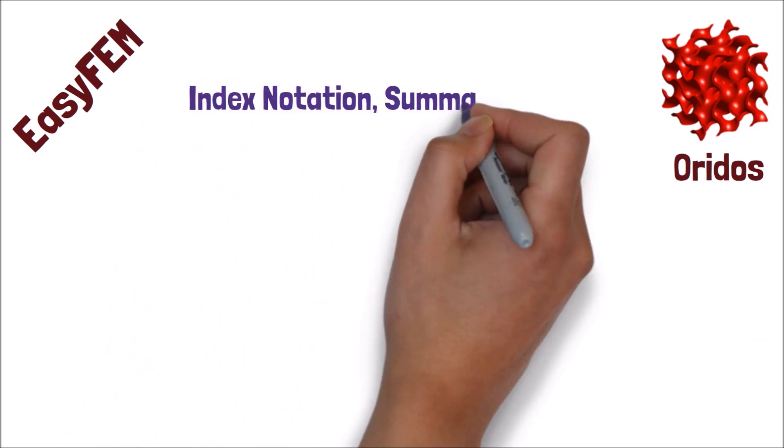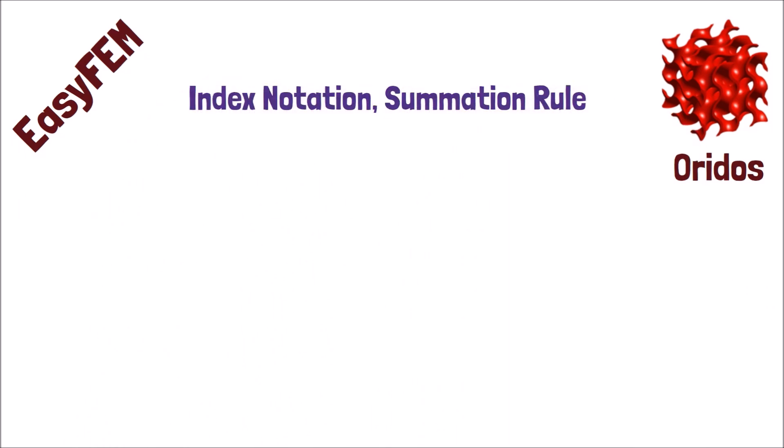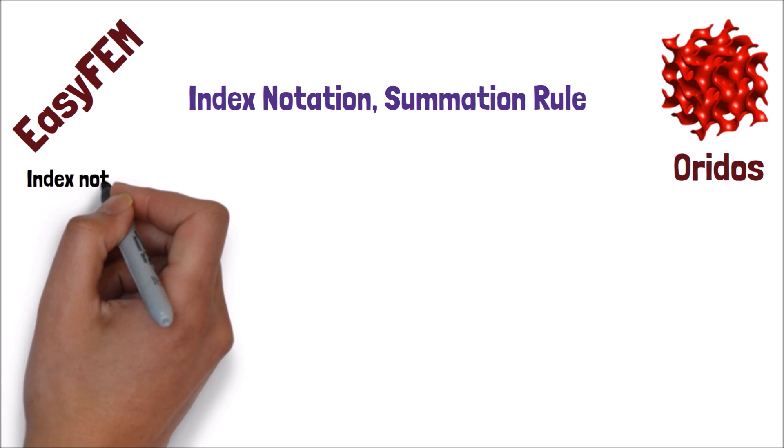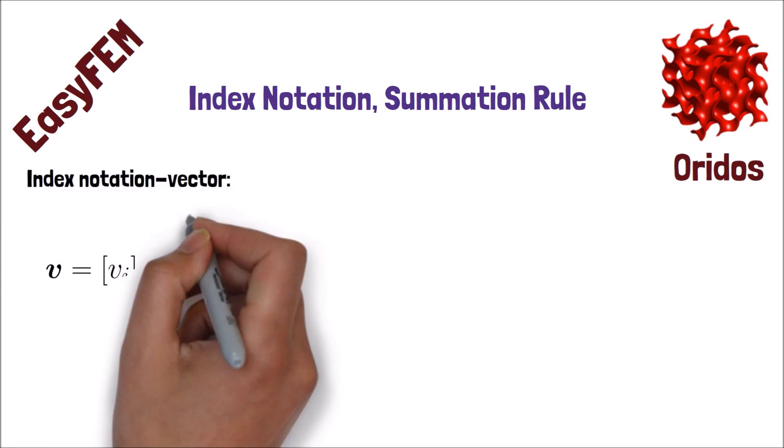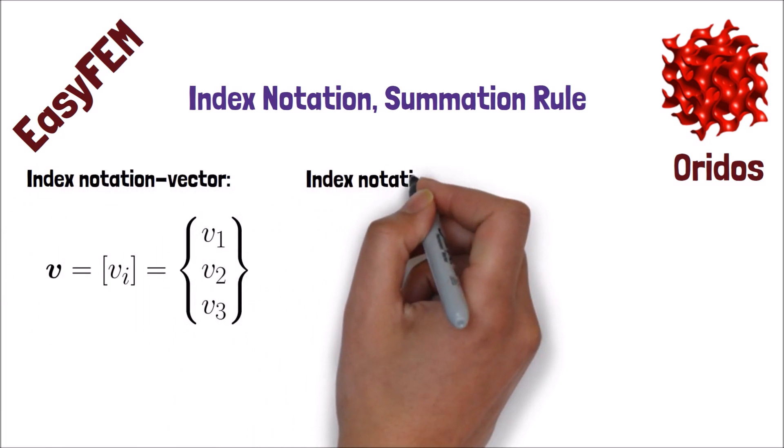To specify the elements of a vector or tensor, we could use a very helpful notation called index notation. With index notation, any vector or matrix can be expressed in terms of its indices. For example, we can express vector V in terms of its indices by VI, or a second-order tensor A by AIJ.